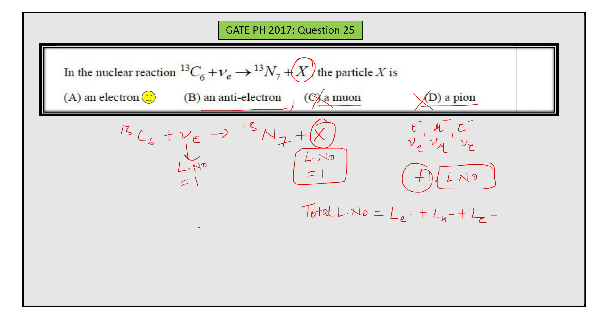Now this is anti-electron. Anti-electron is e positive. For this anti-electron, the lepton number value is minus one. So here we have plus one lepton number value and here we have minus one lepton number value.